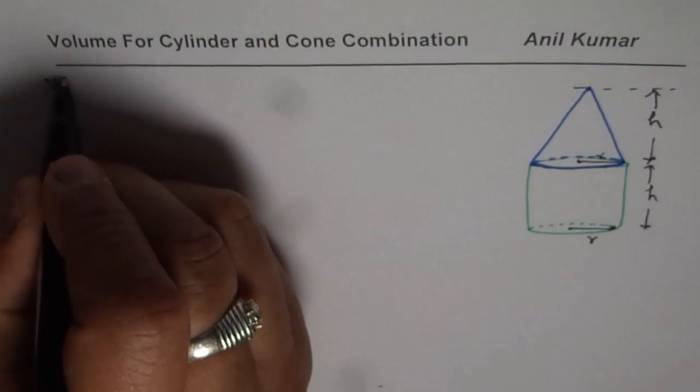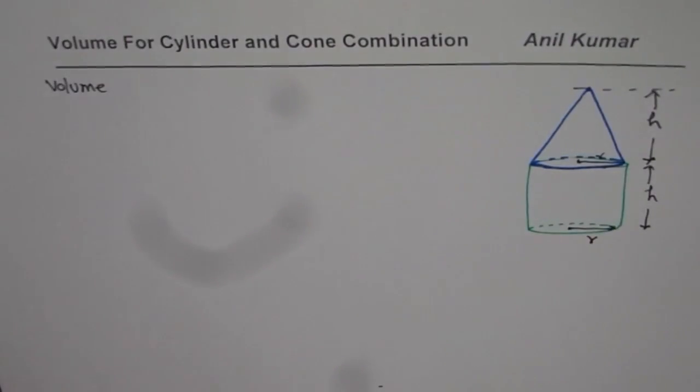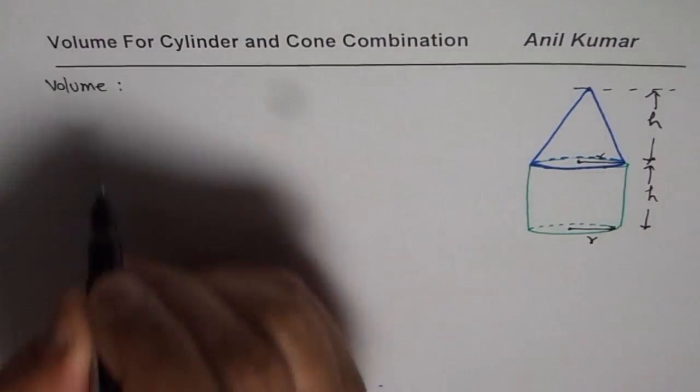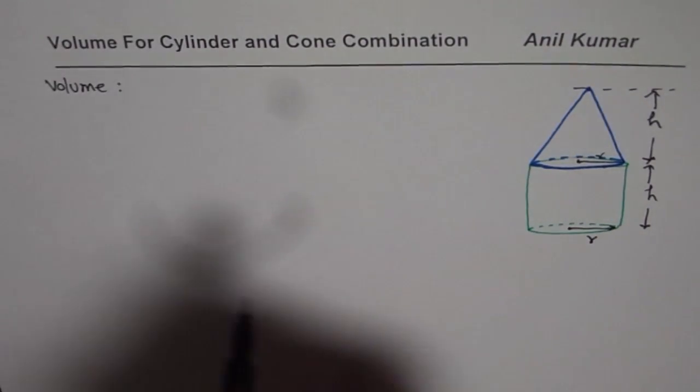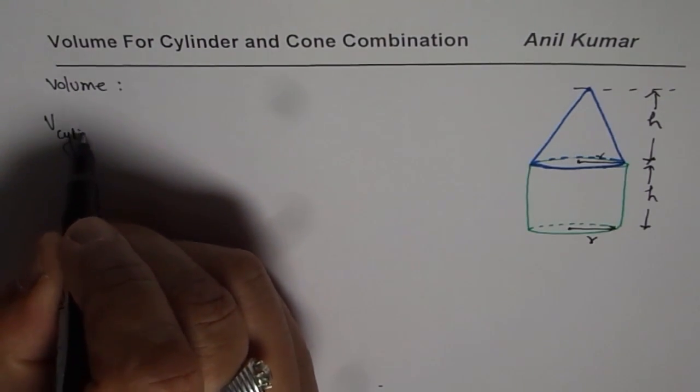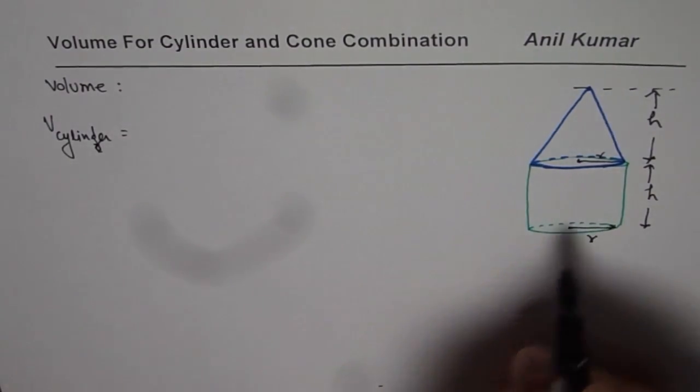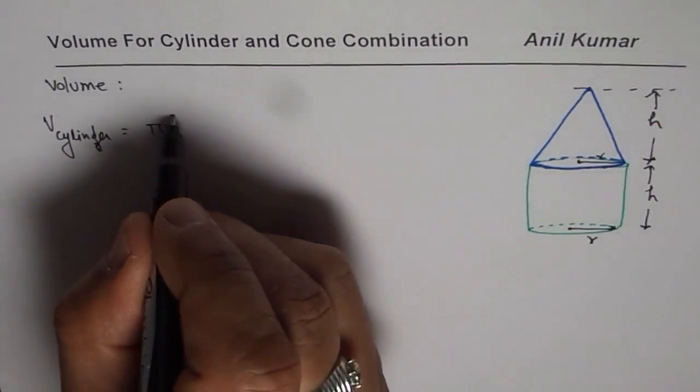Now I am going to show you a very simple way of doing it. We know what is volume of cylinder. The volume for cylinder is pi r square, area of the base pi r square times height. That is volume of a cylinder.